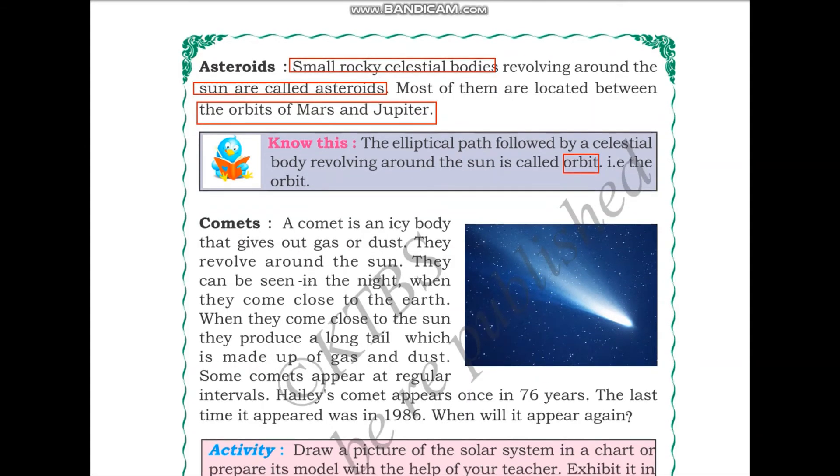Next, comets. A comet is an icy body that gives out gas or dust. They revolve around the sun. They can be seen in the night when they come close to the Earth. Comets are icy bodies that revolve around the sun, and they can be seen when they come close to the Earth during night time.